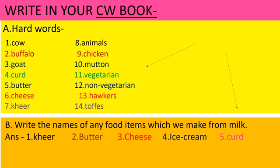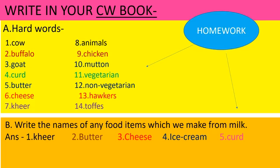Now it is time for homework. Children, write down the homework in your CW book. Question A — hard words. I am giving 14 hard words: 1. Cow, 2. Buffalo, 3. Goat, 4. Curd, 5. Butter, 6. Cheese, 7. Kheer, 8. Animals, 9. Chicken, 10. Mutton, 11. Vegetarian, 12. Non-vegetarian, 13. Hawkers, and 14. Toffees.